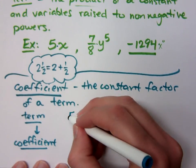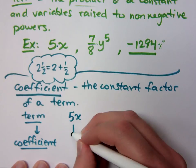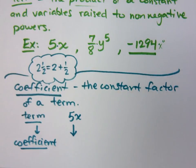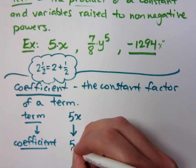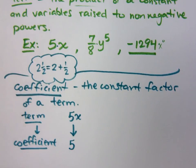So if I were to say 5x, what's the coefficient? What's the constant factor, the constant part of this term? It's just 5, right? That coefficient is basically telling you how much x do you have. I've got 5 x's. Right?